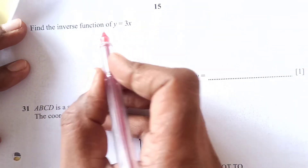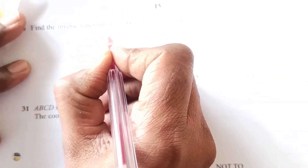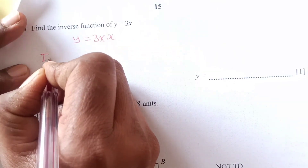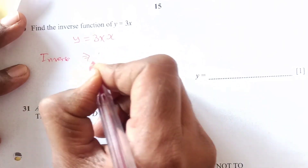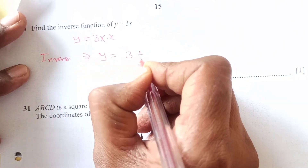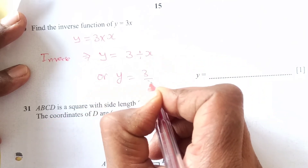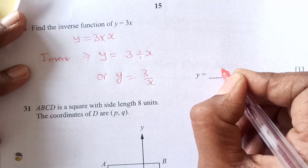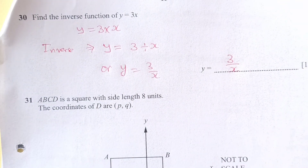Find the inverse function of y equals 3 times x. The inverse reverses the process, so the inverse is y equals 3 divided by x, or y equals 3 over x. That covers all the functions questions for this video.